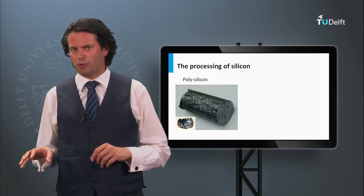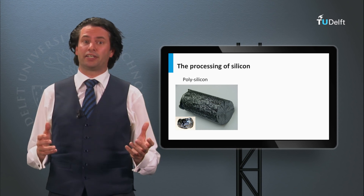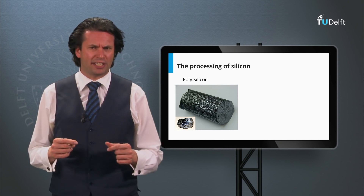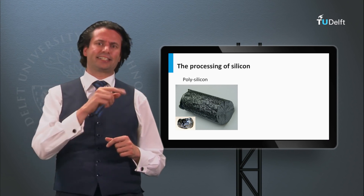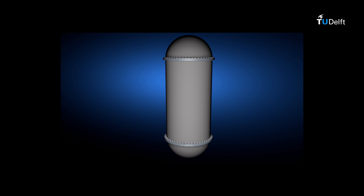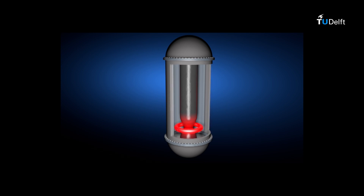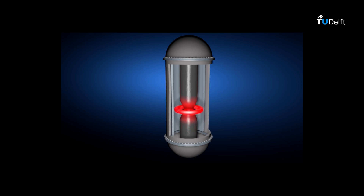The second method to make monocrystalline silicon is the float zone process, which results in monocrystalline silicon ingots with extremely low densities of impurities like oxygen and carbon. The source material is a polycrystalline rod as processed in the Siemens process. The end of the rod is heated and melted using a radiofrequency heating coil. The melted part is put in contact with seed crystals where it solidifies and adopts the orientation of the seed crystal, in either 100 or 111 orientation.